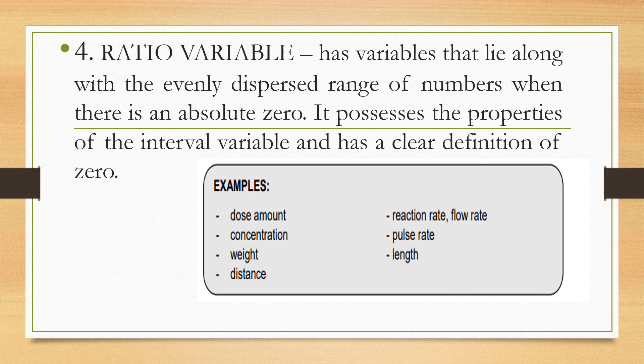Next is ratio variable. When we say ratio variable, it has values that lie along an evenly dispersed range of numbers, but there is an absolute zero. It possesses the properties of interval variable and has a clear definition of zero — meaning it can accept zero as a measurement. Examples include dose amount, concentration, weight, distance, reaction rate, flow rate, pulse rate, and length. For instance, pulse rate of zero means no pulse at all. So it is included in ratio variable.